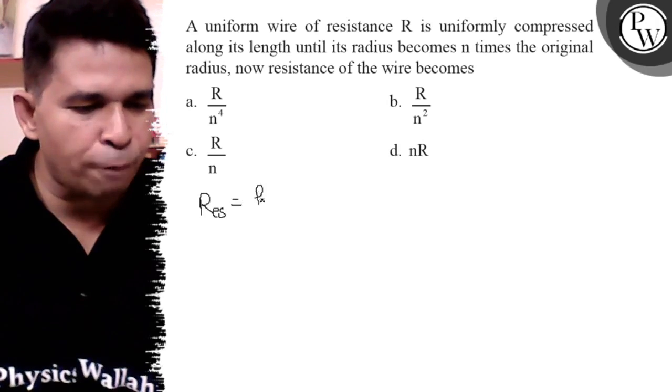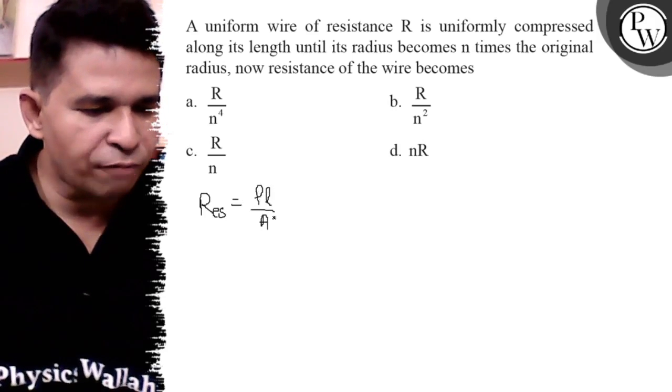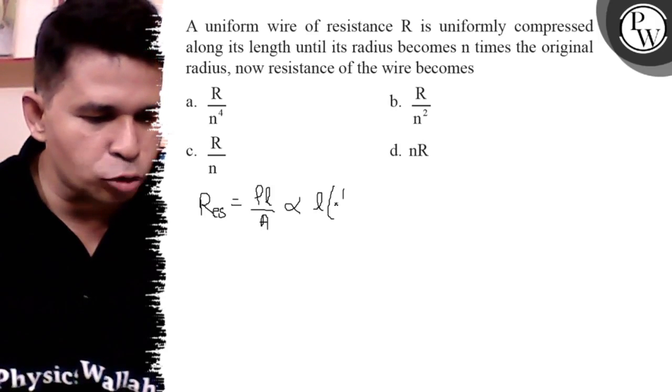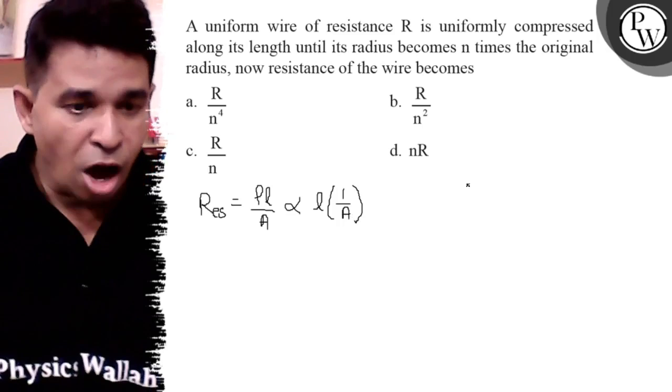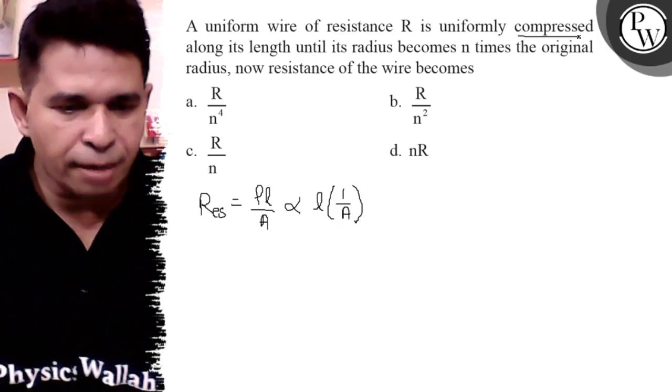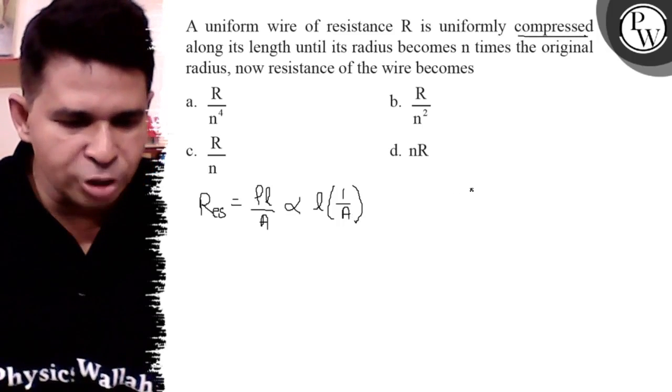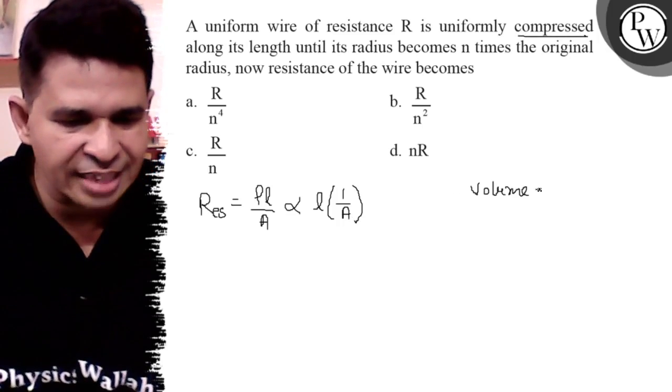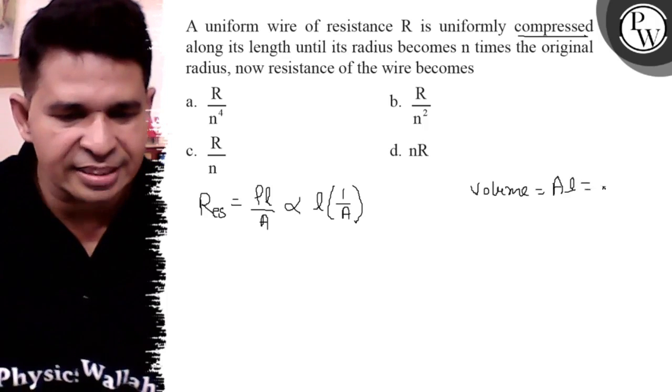So definitely it is directly proportional to L and inversely proportional to 1 by A. Now wire is compressed so volume is constant and what is the volume? It is nothing but area into length.